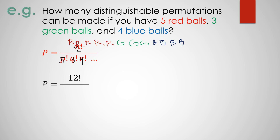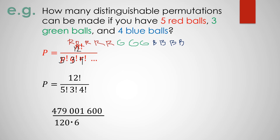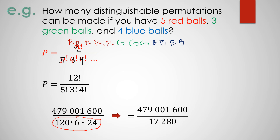Our equation is 12 factorial divided by 5 factorial times 3 factorial times 4 factorial. Simplifying: 12 factorial equals 479,001,600. Divided by 5 factorial (120), times 3 factorial (6), times 4 factorial (24). The denominator is 120 times 6 times 24, which equals 17,280. So 479,001,600 divided by 17,280 gives 27,720. Therefore, the number of distinguishable permutations from 5 red, 3 green, and 4 blue balls is 27,720.